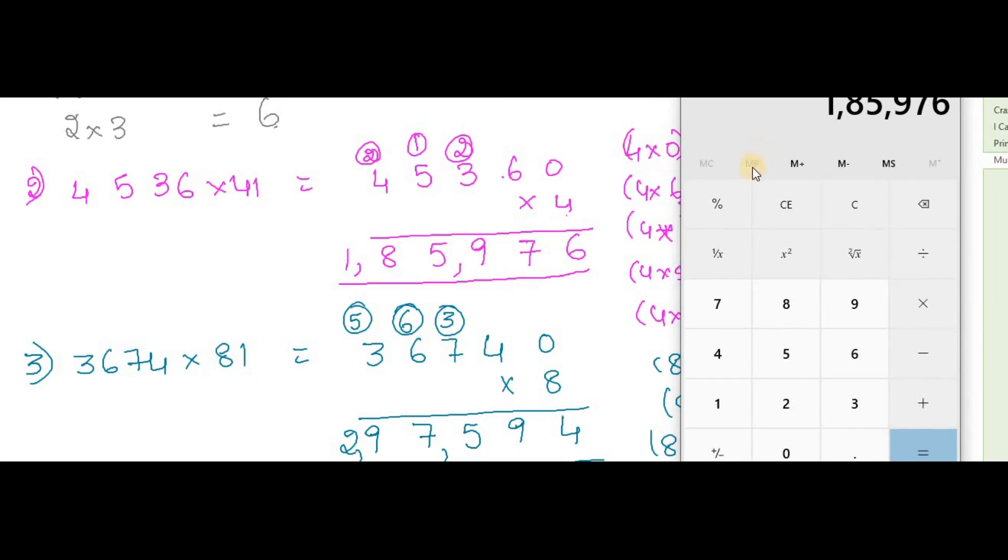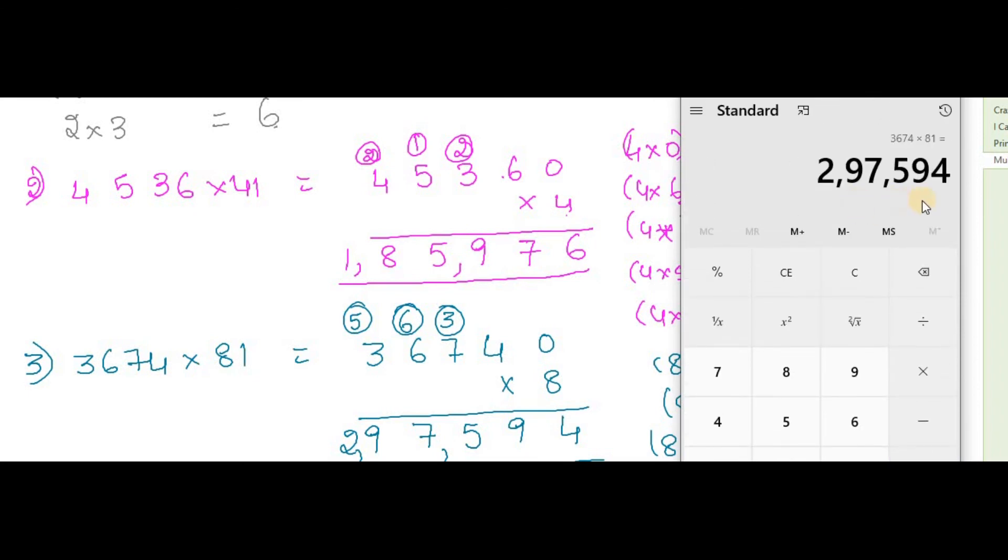We can check both. 4536 multiplied by 41, the answer is 185976 - correct. Now moving on to the next question: 3674 multiplied by 81, and the answer is 297594.